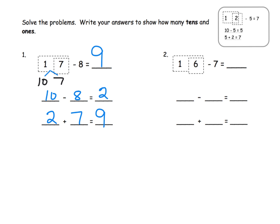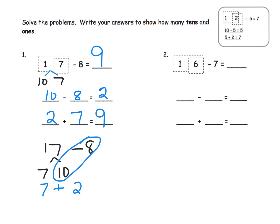In previous lessons, what we would have done is taken that 17 minus 8, decomposed the 17, and then informally looped these together and said: 10 minus 8 is 2, plus the original 7 is equal to 9. So we're doing the exact same thing, but now we're trying to write it in a more official, formal way.